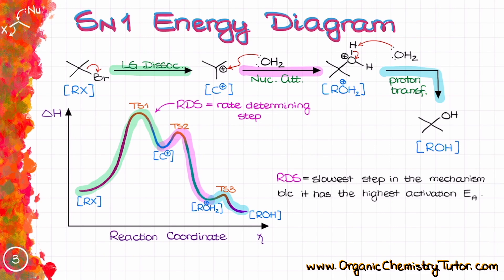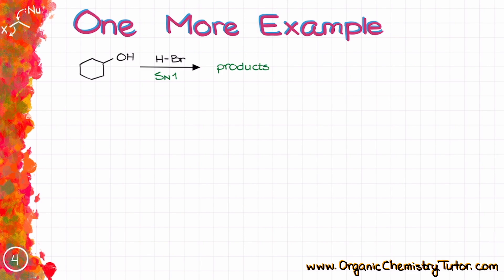And our rate determining step, in this case, the rate determining step is right over here, is the first step in this reaction that leads towards the formation of the carbocation. Let's look at one more example.